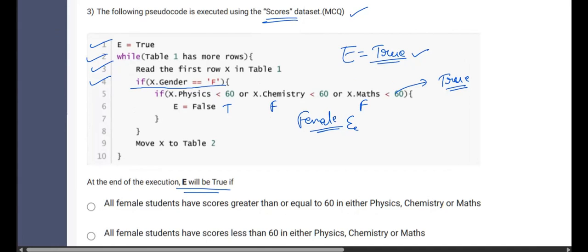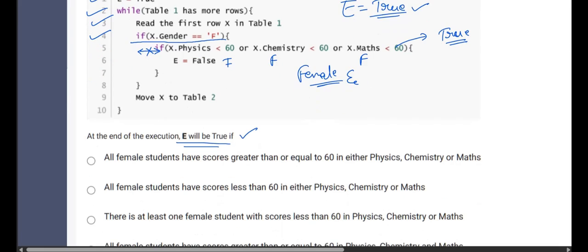That is what they're asking in the question. They're asking at the end of execution, E will be true. When will E become true? E will remain to be true if this particular step called five does not satisfy the condition. That means all these three values should be false. Therefore, how can we tell here, but remember one thing, these are interconnected with OR operators. Therefore, the answer should be very accurate.